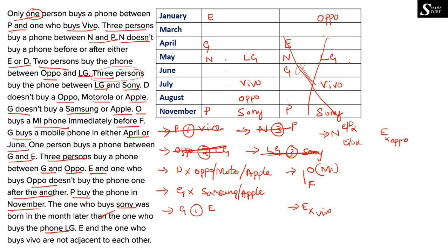Now we have done almost everything and need to substitute the remaining persons. E and Oppo are already placed. N is substituted, and E or D should not be an immediate neighbor to N, so D should not go in that position. The remaining clue: immediately before F, O has to come and O buys MI phone. Testing positions for F — if F goes in a valid slot, O takes the slot immediately before, and MI is assigned there. The only valid possibility is confirmed and substituted.